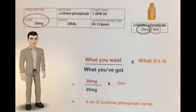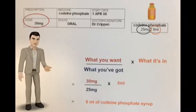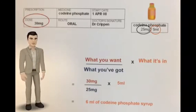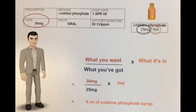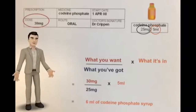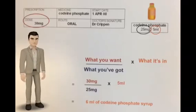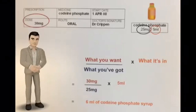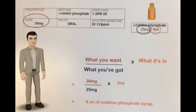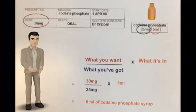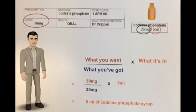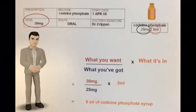Your patient has been prescribed 30mg of codeine phosphate. Codeine phosphate is available as 25mg per 5ml syrup. How much syrup do you give the patient? We use the formula: what you want over what you have got times what it is in. So you are doing the sum: 30mg divided by 25mg times 5ml, which gives you an answer of 6ml of codeine phosphate syrup.